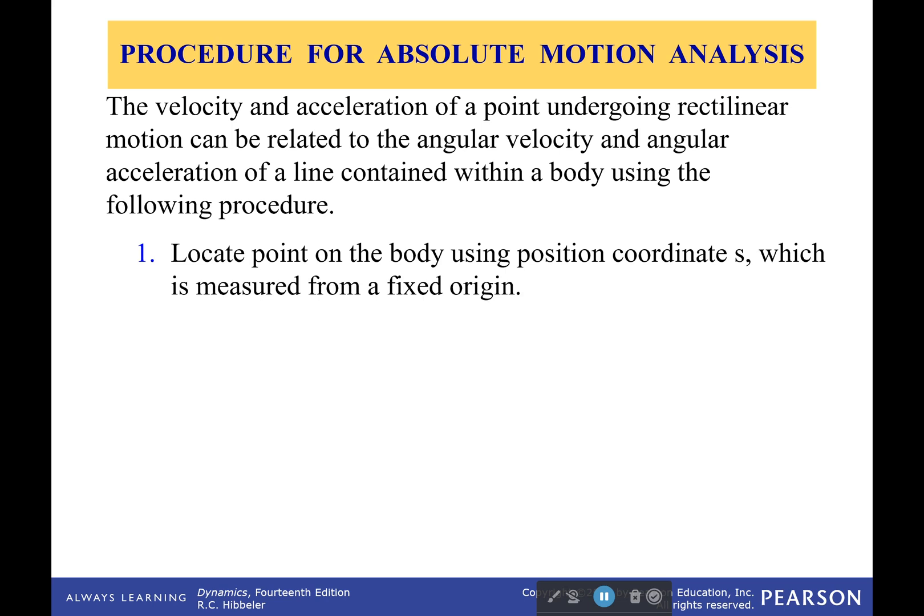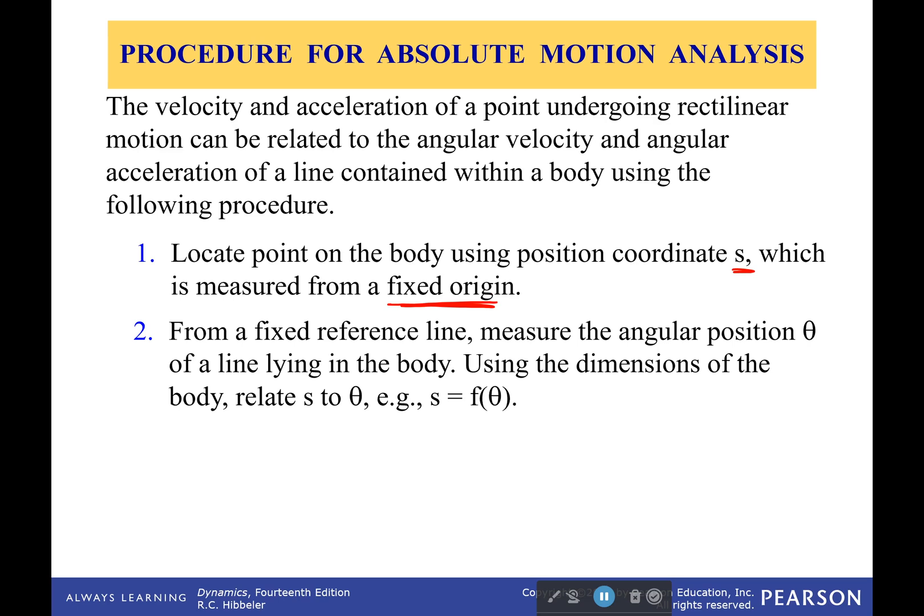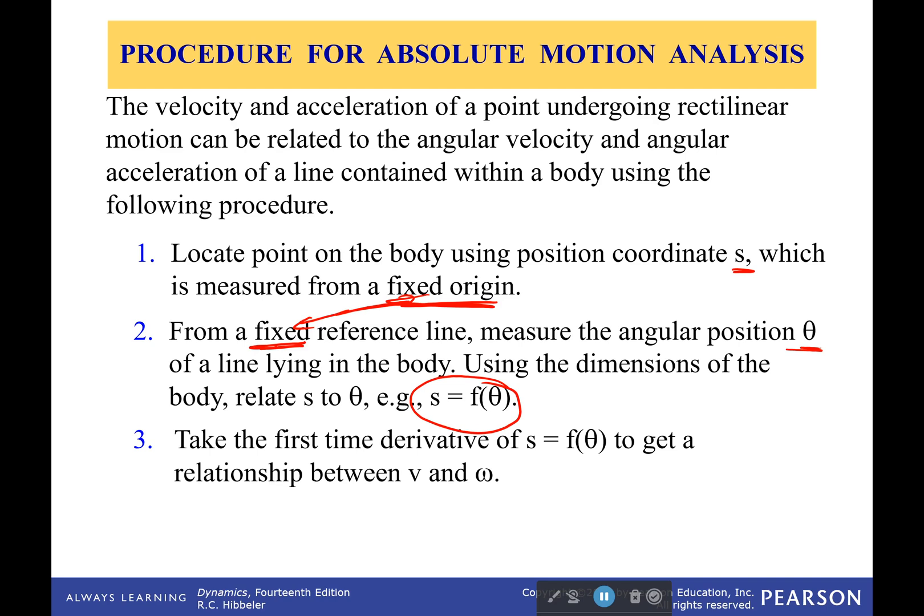So velocity and acceleration of a point undergoing rectilinear motion can be related to the angular velocity and angular acceleration of a line contained within the body using the following procedure. First off, locate a point on the body using position coordinate s, which is measured from a fixed origin. You need to have a fixed origin where nothing moves. Second, from a fixed reference line, measure the angular position theta. Once again, fixed, fixed, fixed—fixed origin, fixed reference line. And then from that you can develop a relationship that says okay, this is how that angular position and my position coordinate are connected. Then we take our time derivatives to get the angular velocity and angular acceleration.